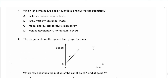Question 1 asks which list contains two scalar quantities and two vector quantities. In choice A: distance, speed, time, and velocity — speed, distance, and time are all scalars, so there are three scalars, not two. In choice B, force and velocity are vectors while distance and mass are scalars. So the answer is B.